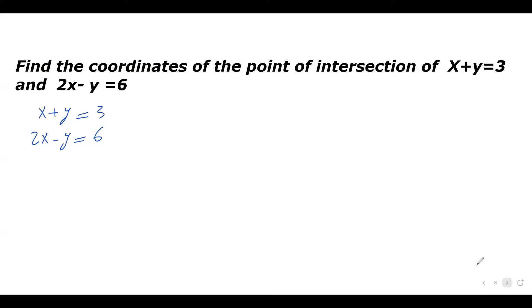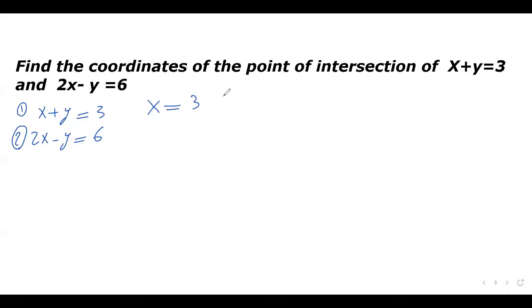Step one is to isolate a variable. This is equation one, this is equation two. I want to isolate one variable — always go with the easier equation. I'll choose equation one and isolate x. Leave x on the left side: x equals 3 minus y, moving the positive y to the right side where it becomes negative y. So x equals 3 minus y. That's step one — we isolated x.